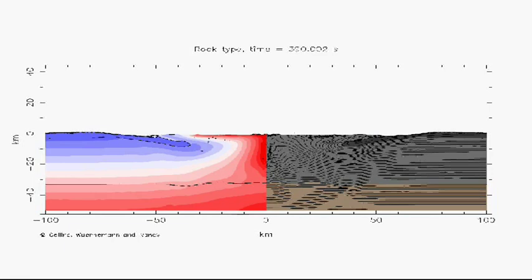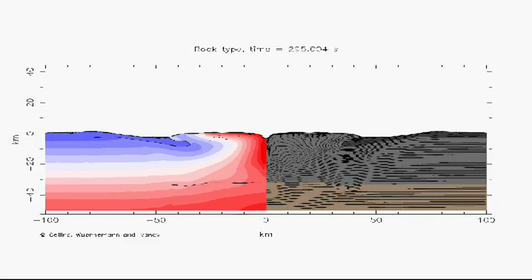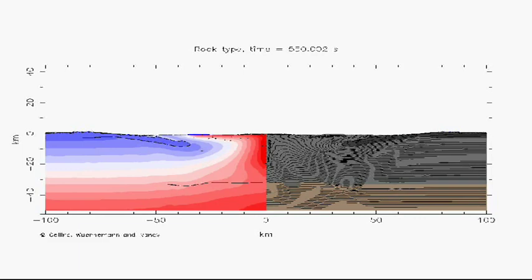How does this graph relate to your research? We have compared this model, and others like it, with observational data from the Chicxulub crater to understand exactly how big the asteroid was that struck 65 million years ago, and hence what the environmental consequences of the impact were likely to have been.